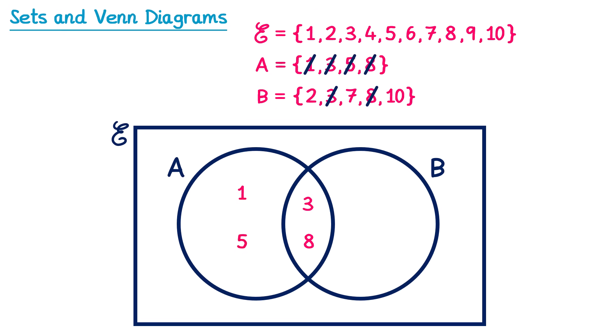For set B, the number 2 is in B but not in A, so it goes on the right side of the B circle, and the same for 7 and 10. Now we go back to the universal set to check for any numbers not yet included. So far we've placed 1, 2, 3, 5, 7, 8, and 10, so we're missing 4, 6, and 9. These numbers are inside the universal set but not in sets A or B, so they go inside the rectangle but not inside the circles. That gives us the completed Venn diagram.